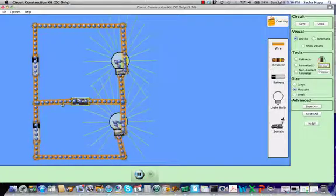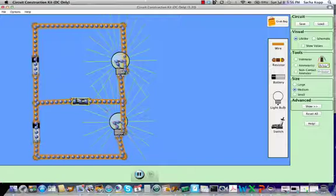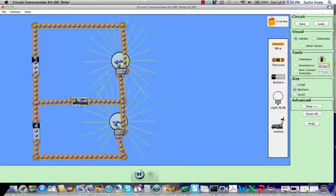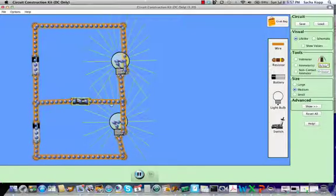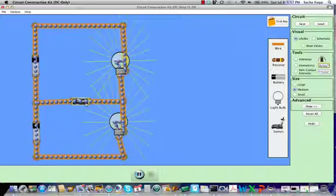And so the left to right current from the upper loop is exactly canceling the right to left current for the lower loop and as a result the net current through the switch is zero. And you can see that directly in the simulation because none of the little blue dots representing charges are moving through the switch.